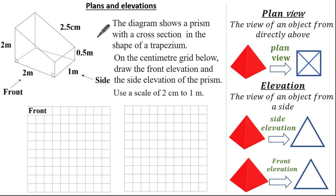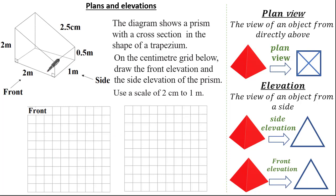Now let's have a look at our last exam question. The diagram shows a prism with a cross-sectional area of a trapezium. We're asked to draw on the centimeter grid the front elevation and the side elevation of our prism. The scale is 2 centimeters to 1 meter. See if you can give it a go and press pause if you need.